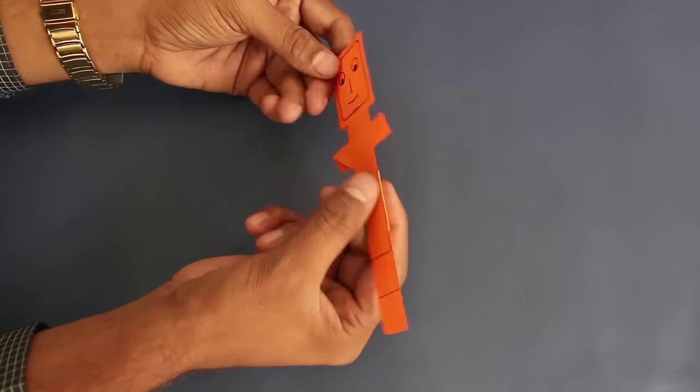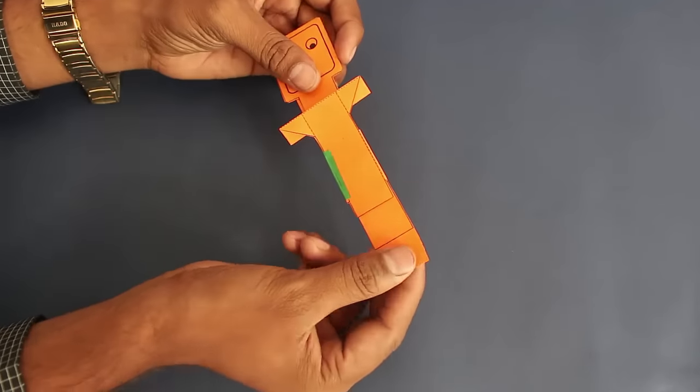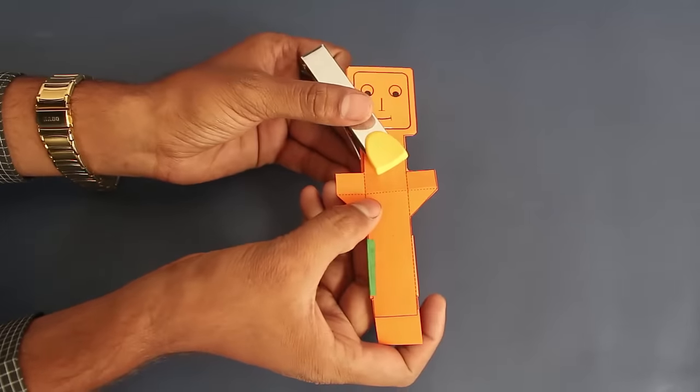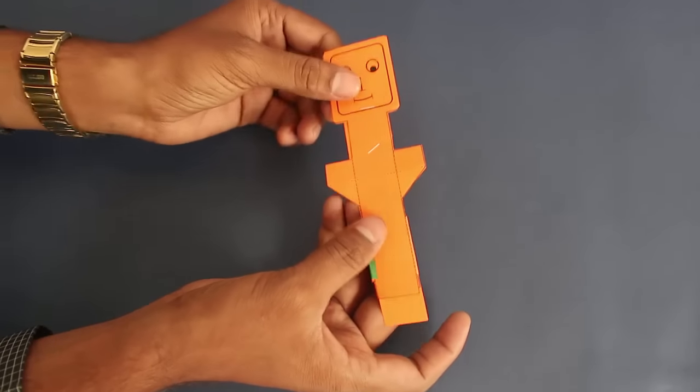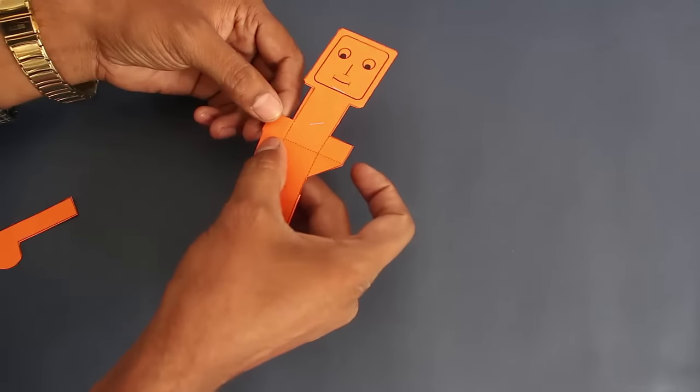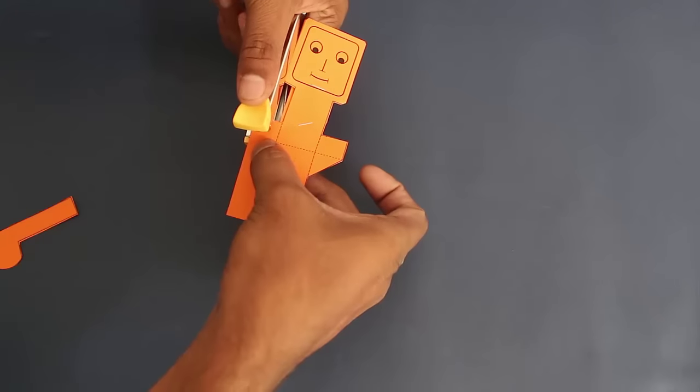Again, staple the strip to the neck. Then staple both arms to the shoulders of the puppet. Well, now the toy is taking shape.